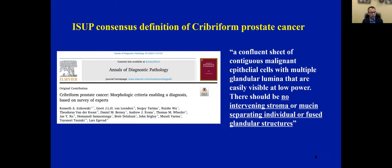There have been recent attempts to improve the definition of cribriform Gleason pattern 4. Using a set of images in two separate studies, ISUP issued a consensus definition of cribriform prostate cancer, defining it as a confluent sheet of contiguous malignant epithelial cells with multiple glandular lumina that are easily visible at low power. Importantly, there should be no intervening stroma or mucin separating individual or fused glandular structures — two parameters that came out as very, very important.